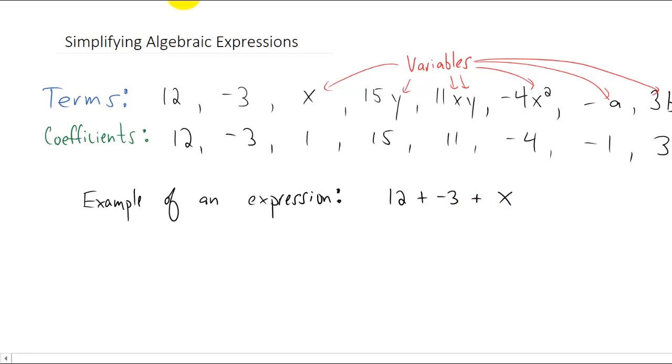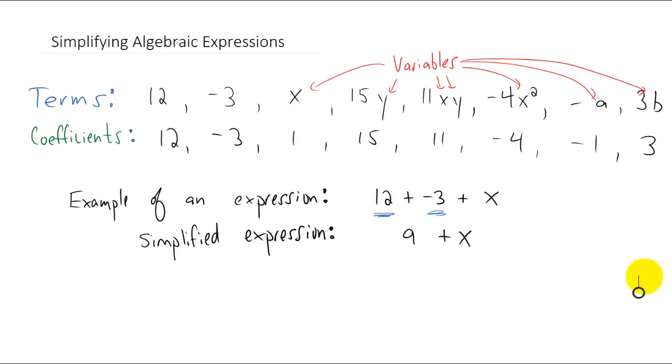Well, you know something about this expression already. You've already learned that you can take twelve and you can add twelve plus negative three. You know how to do that. You know that twelve plus negative three is nine, so why would we write it this way when we know that it can be simplified? So we can simplify 12 + (-3) + x into just 9 + x.